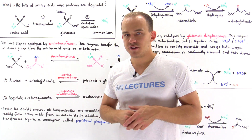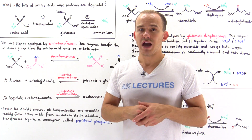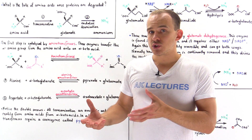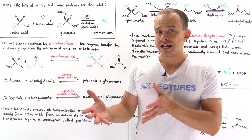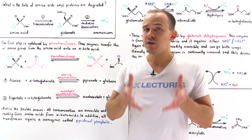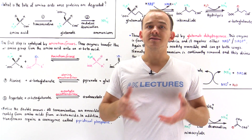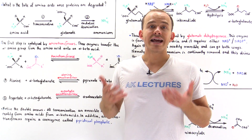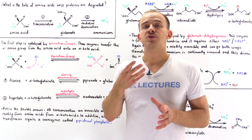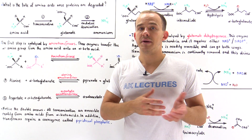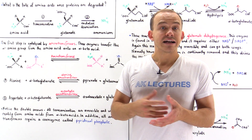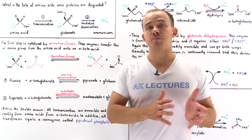You might be thinking we can store those amino acids for later use. In the same way that we can store glucose as glycogen and we can store extra fatty acids as triglycerides, can we store extra amino acids inside our cells? And the answer is simply no. Our cells do not have a way to actually store any excess amino acids, and so what must happen to these extra amino acids is they must be broken down.